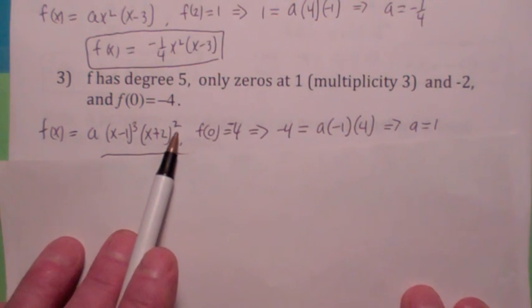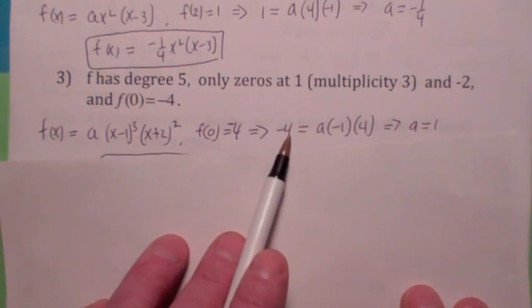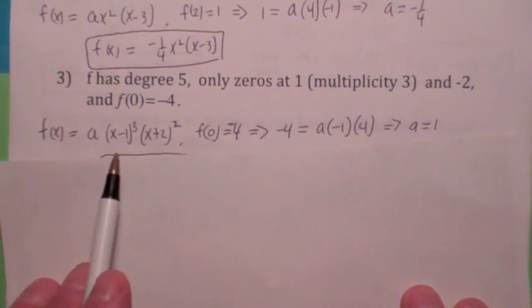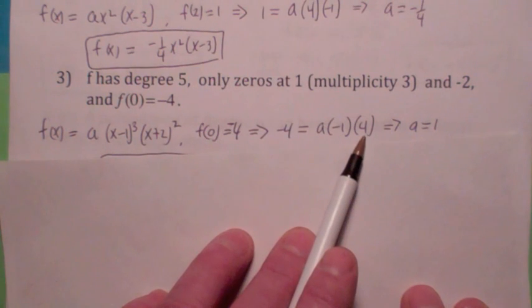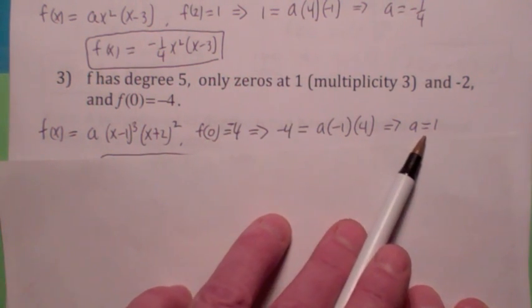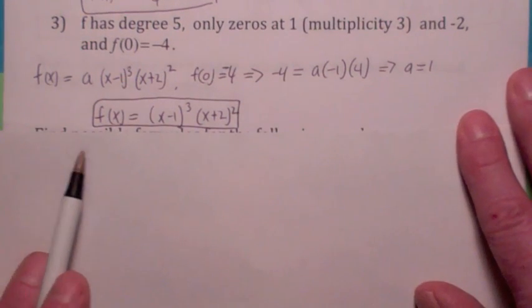a times (x - 1)³ times (x + 2)². Plug in, set y equal to negative 4, and plug in 0 for x. So you get negative 1 here and 4 here. And so that means that a has to equal 1 again. Don't count on a being always 1, though. So this is your polynomial function right here.